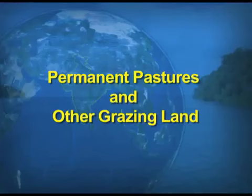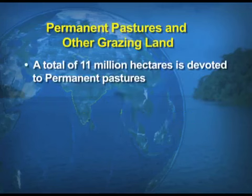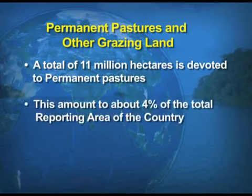The next category is permanent pastures and other grazing land. A total of 11 million hectares is devoted to permanent pastures, which amounts to 4% of the total reporting area of the country. Reporting area, as we discussed, is all land uses put together.